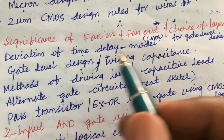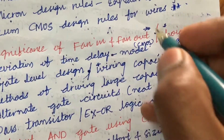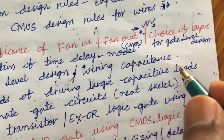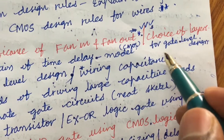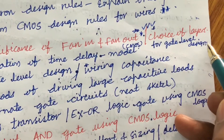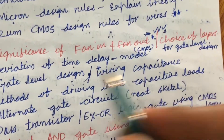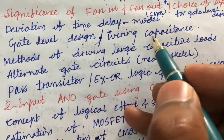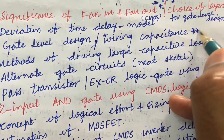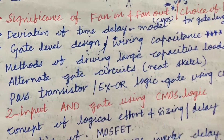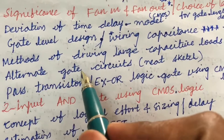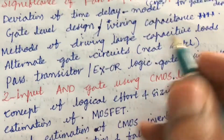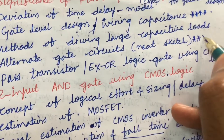The significance of fan-in and fan-out related to CMOS is one of the gunshot questions and very very important. The choice of layers for gate-level design, derivation of the time delay model in gate-level design, wiring capacitance — writing a short note on wire capacitance is one of the very important questions — and methods of driving large capacitive loads and alternate gate circuits along with a neat sketch are all important topics.